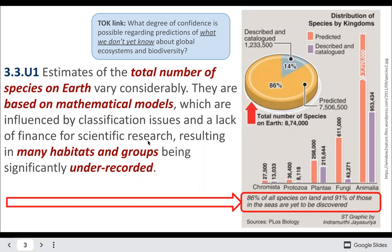It's really hard because we've only described a small fraction of species, so we're trying to predict how many other species there are on Earth. Even in a place like Arizona, one of my friends is an entomologist who studies insects, and he's describing maybe a dozen or more new insect species every single year that are new to science.